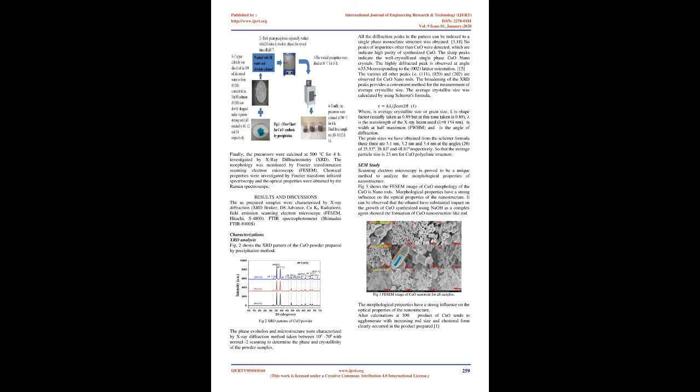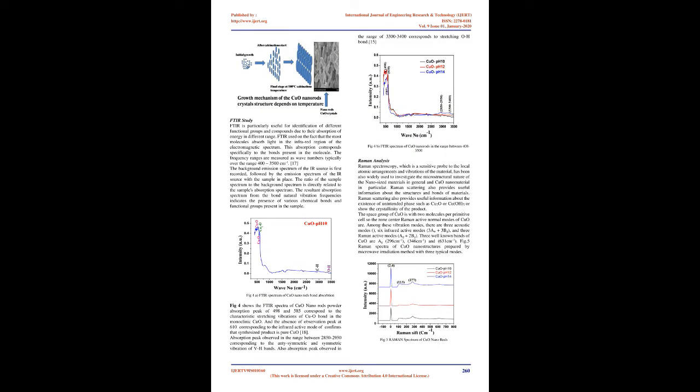SEM Study: Scanning electron microscopy is a unique method to analyze the morphological properties of nanostructures. FIG. 3 shows the FESEM image of CuO; the morphology of the CuO is nanorods. Morphological properties have a strong influence on the optical properties of the nanostructure. It can be observed that ethanol has substantial impact on the growth of CuO synthesized using NaOH as a complexing agent, showing the formation of CuO nanostructure-like rods. After calcination at 500°C, the product of CuO tends to agglomerate with increasing rod size and clustered form.